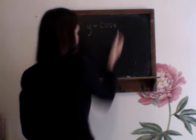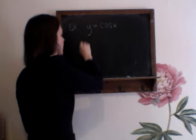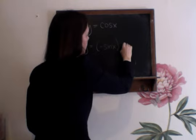So here's y equals cosine x. We want to find dy. dy is the derivative. So the derivative of cosine is negative sine x times dx.